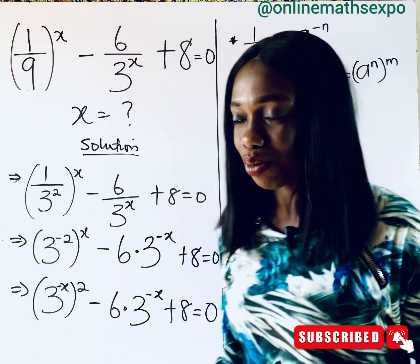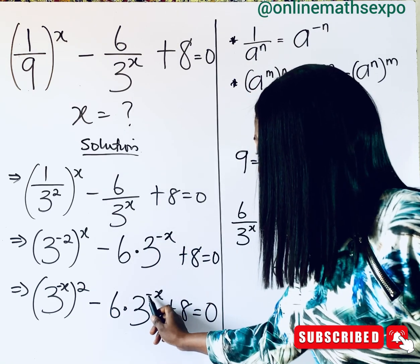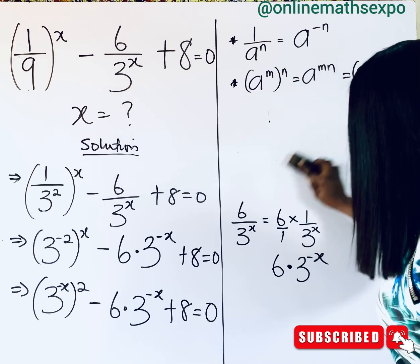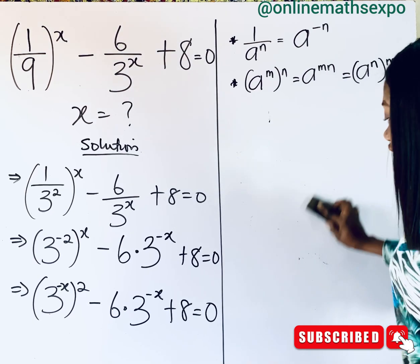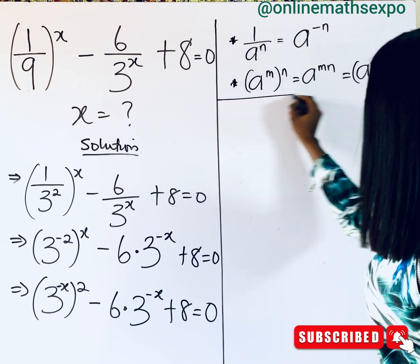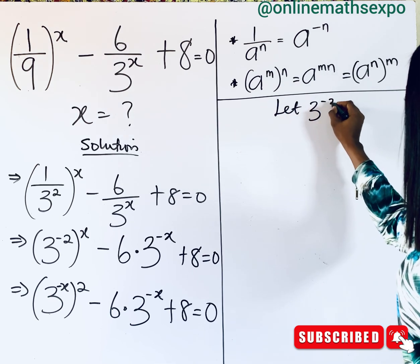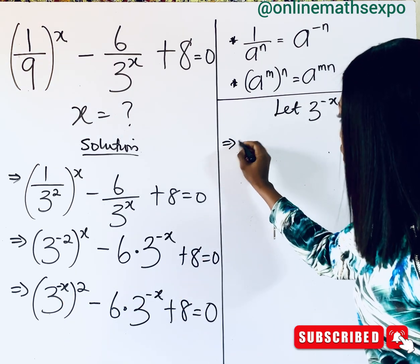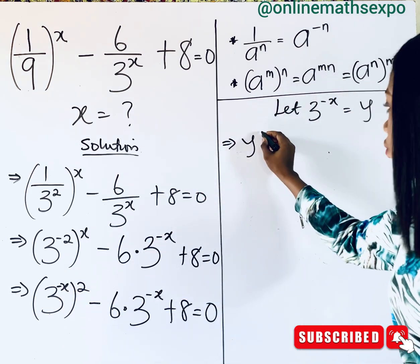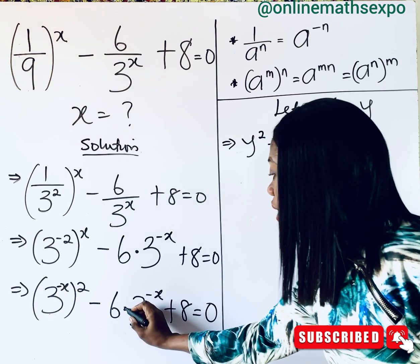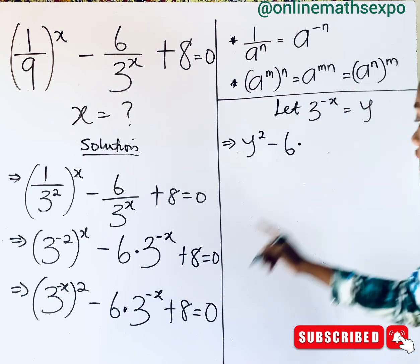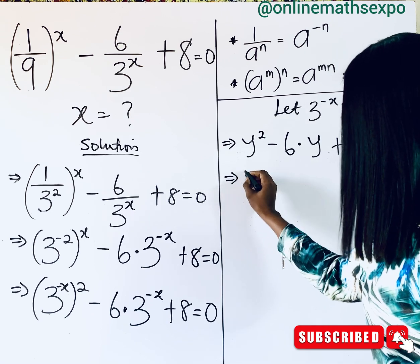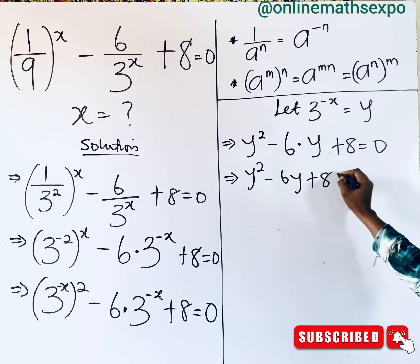At this point, you should have observed something: 3 to the power of negative x is common, so we can choose to replace it with any variable of your choice. I'm going to replace mine with the variable y. So let 3 to the power of negative x be y — anywhere you see it, you replace it with y. This gives us y squared minus 6 multiplying y, plus 8 is equal to 0.